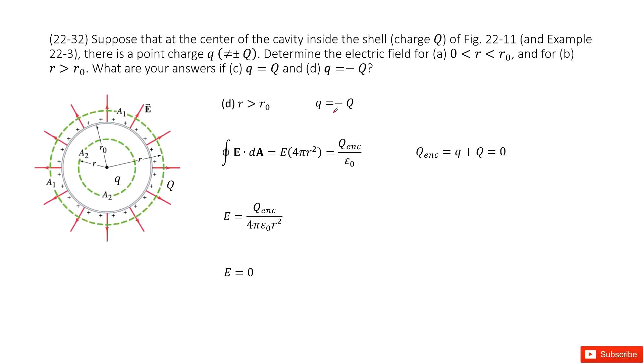The next case is when small q equals negative Q. The enclosed charge is q plus capital Q. Add these two terms together, it becomes 0. Now we replace the enclosed charge as 0, making the electric field equal to 0. Thank you.